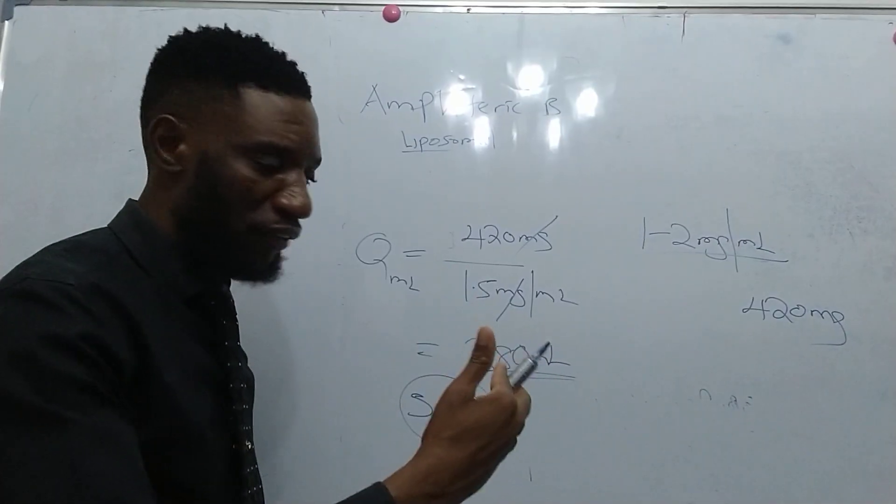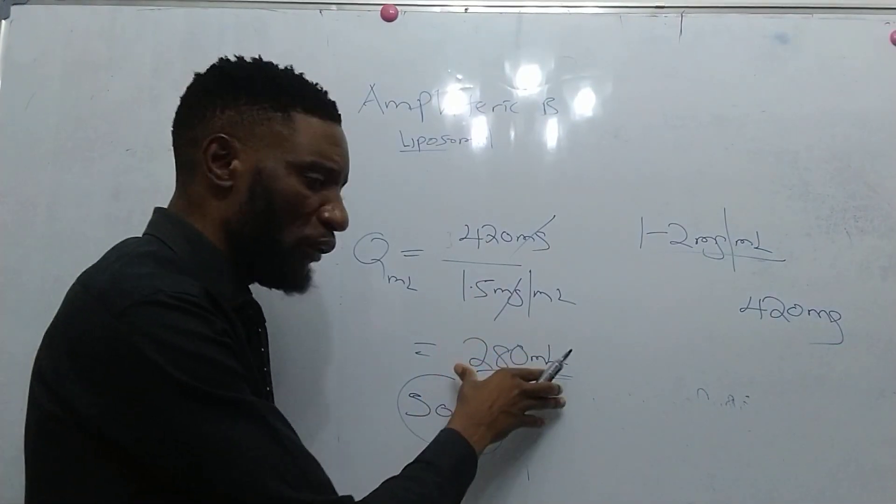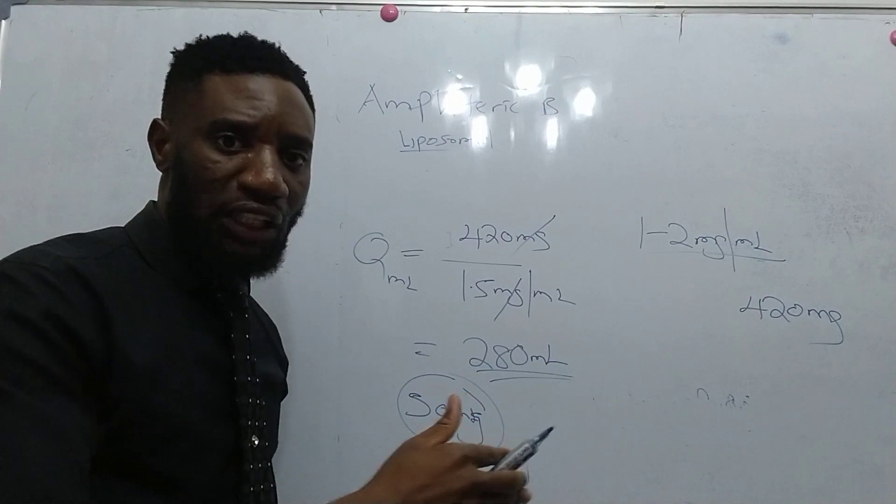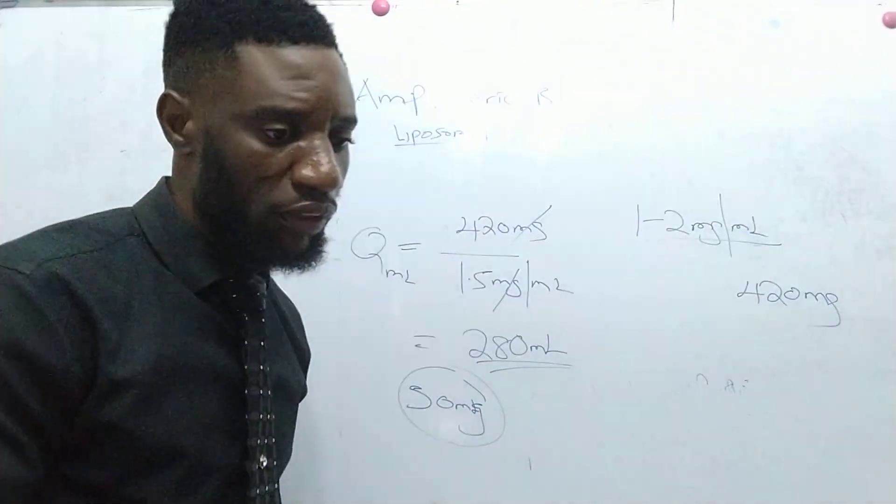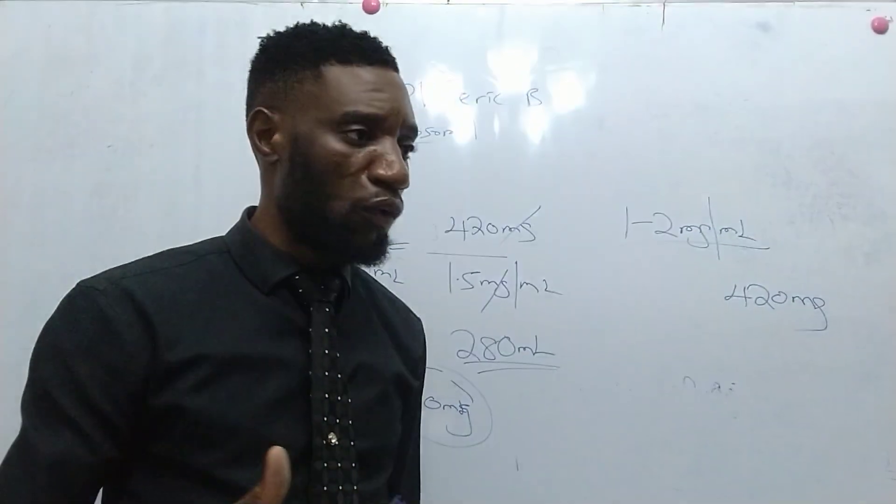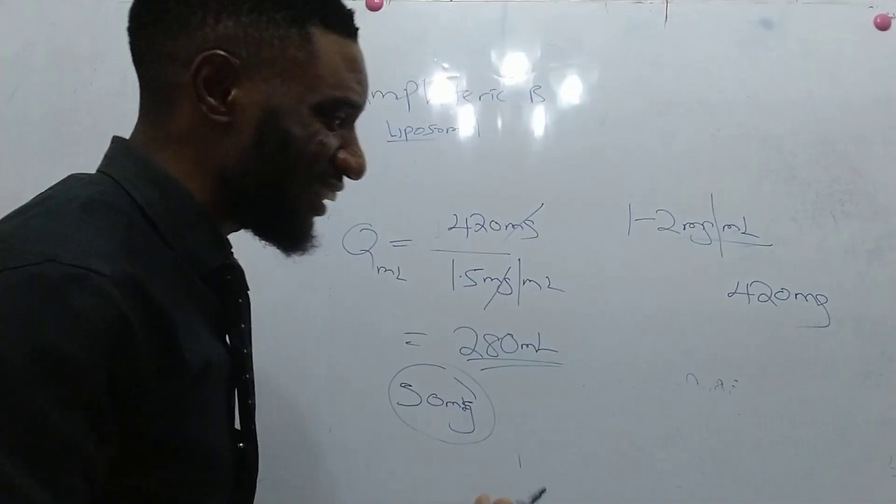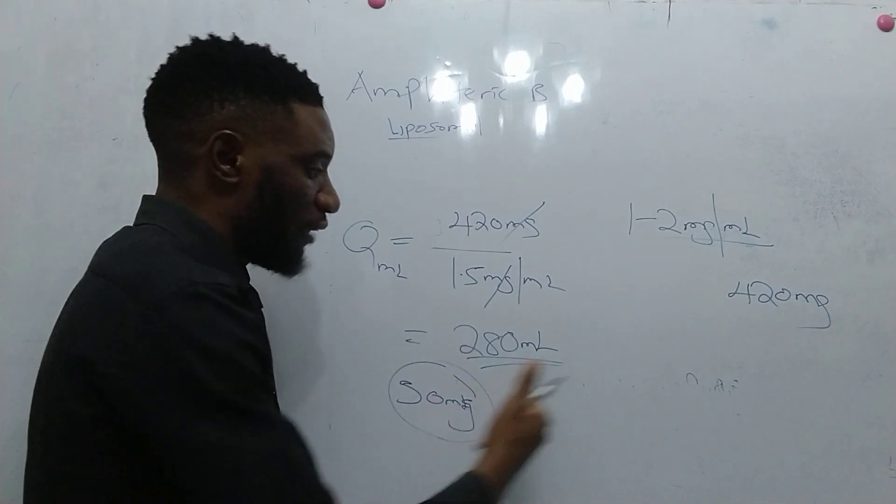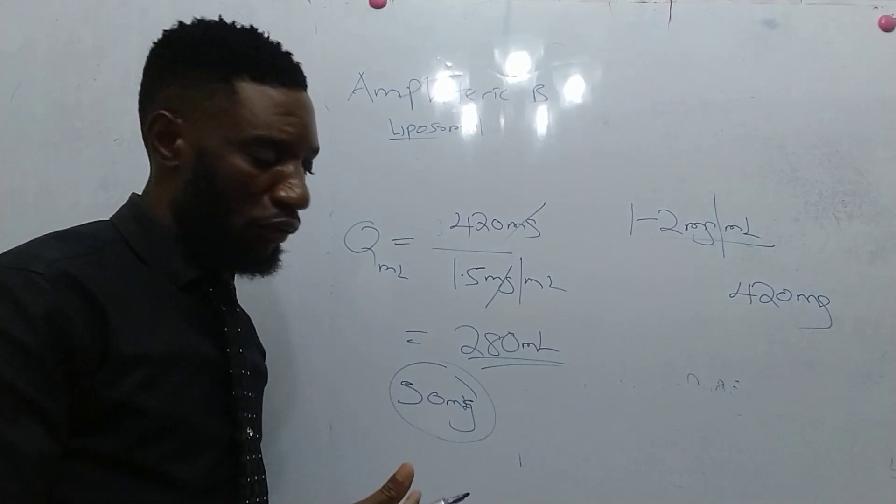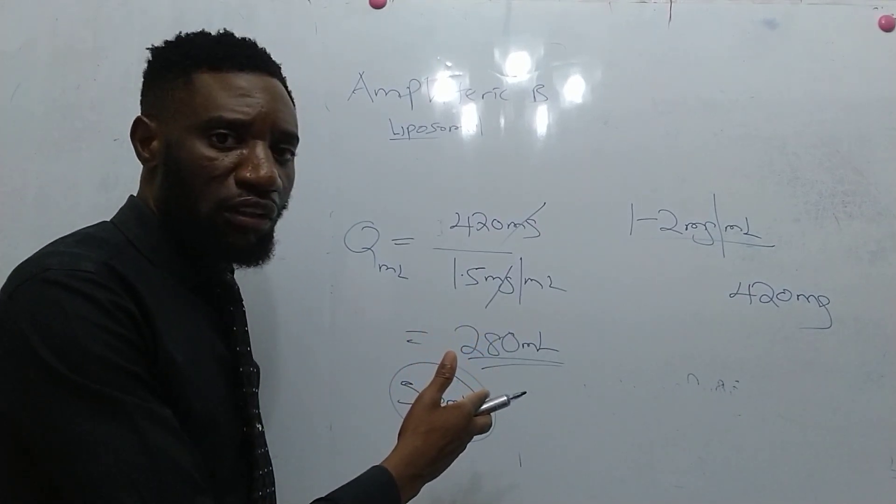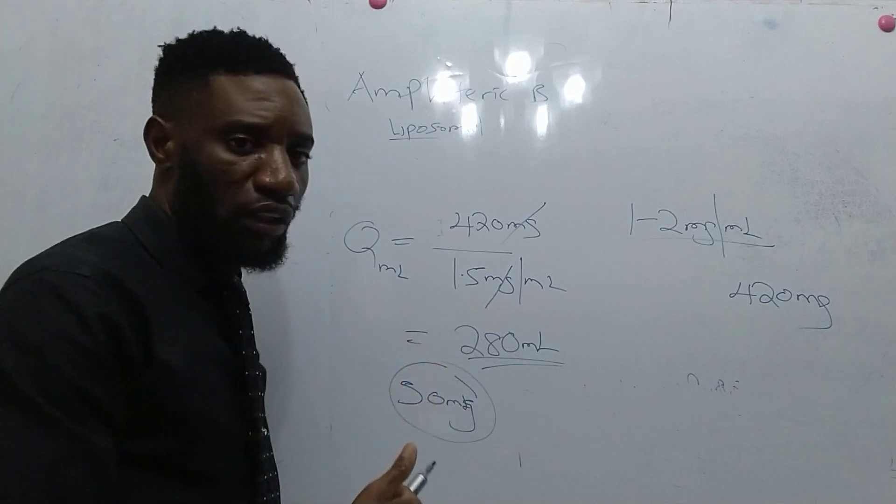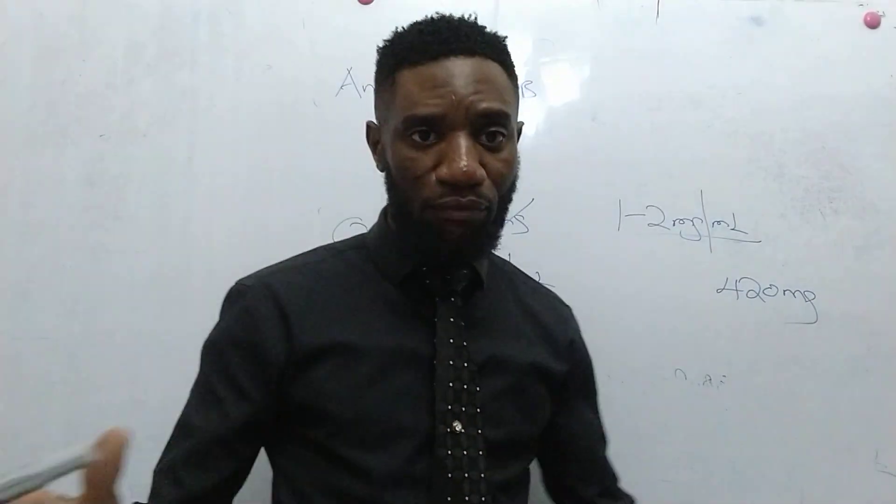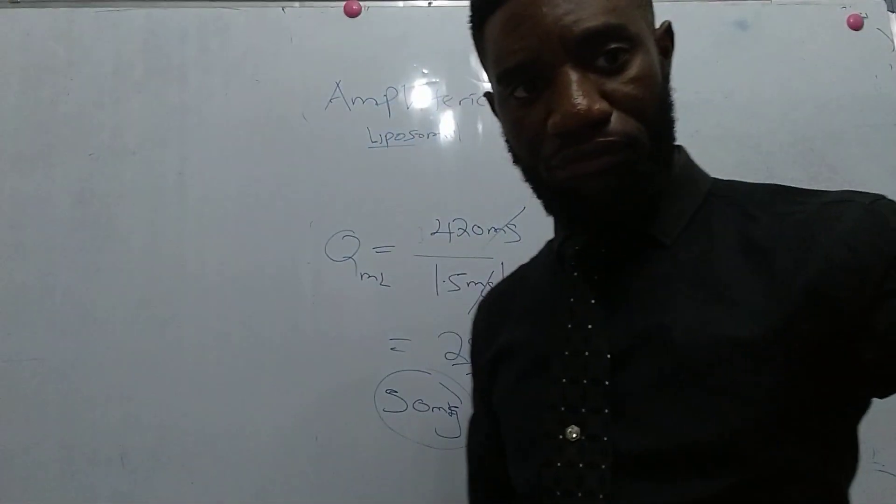You can calculate the number of drops per minute if needed. With 280 mL over 1-2 hours, the drop rate depends on your giving set—some are 20 drops/mL, others 15 drops/mL. This is how you reconstitute liposomal amphotericin B. Thank you for watching my channel, please like and share.